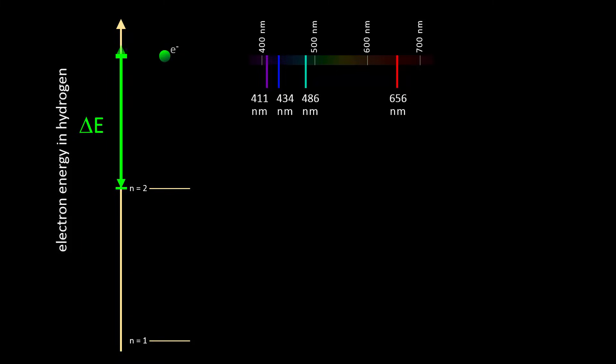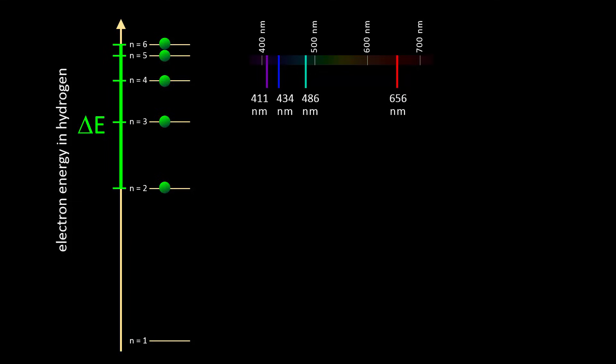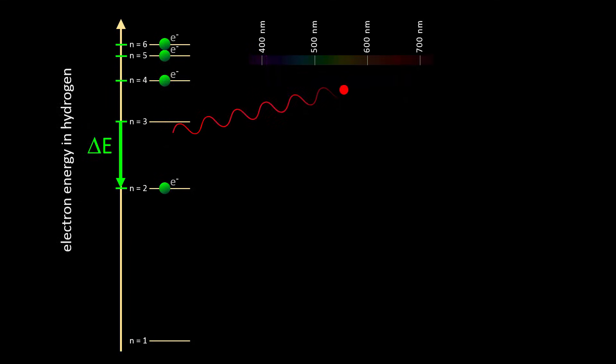If the electron could exist at any energy, then the changes in electron energy, here represented by delta E, would result in emitting a large spectrum of colors, a continuous rainbow. But only discrete colors are seen, and so the electron must remain at discrete energies.